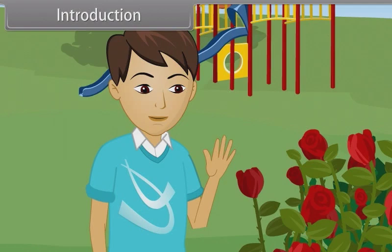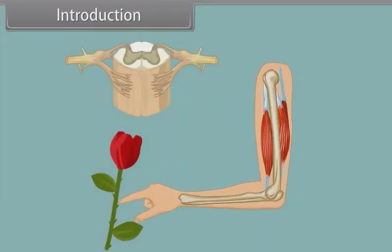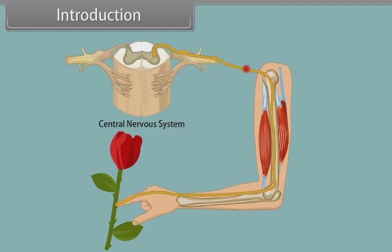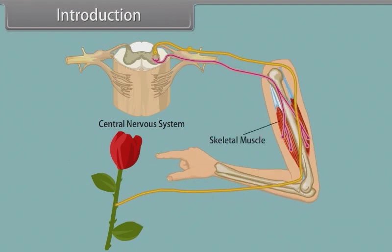Let's see more closely. When he touches the stem of the flower, the thorn on it pinches him and sensors detect stimuli present below the skin. This stimuli passes to the central nervous system and in response, the skeletal muscles contract and he withdraws his hand. So, throughout this module, we learn neural control and coordination.